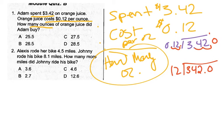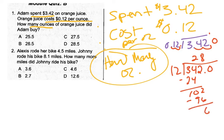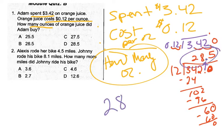12 goes into 34 twice. 2 times 12 is 24. I subtract and get 10. I bring the 2 down. 12 goes into 102 eight times. 8 times 12 is 96. I subtract and get 6. I bring this 0 down. 12 goes into 60 five times. The decimal point comes straight up, so my answer is 28.5 ounces, which would be answer D.